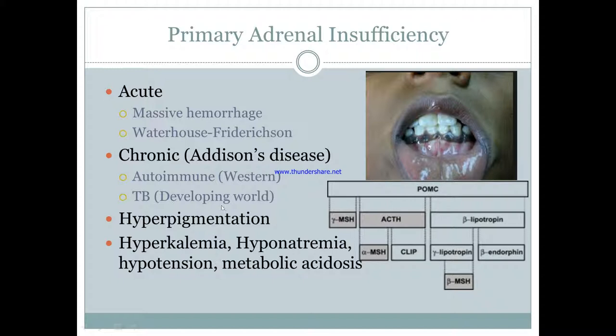Because you have loss of your adrenal glands, you're going to have loss of aldosterone, resulting in hyperkalemia, hyponatremia, and hypotension. And of course, loss of cortisol as well, and metabolic acidosis because you have hyperkalemia.